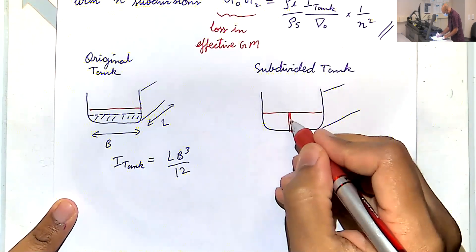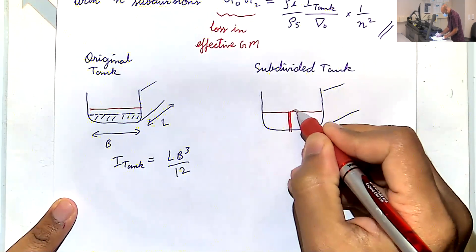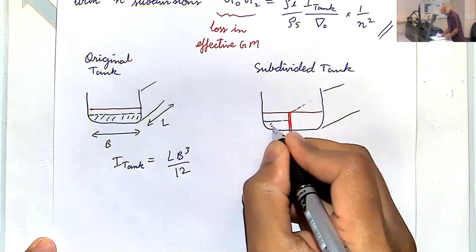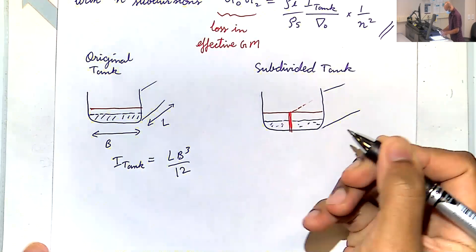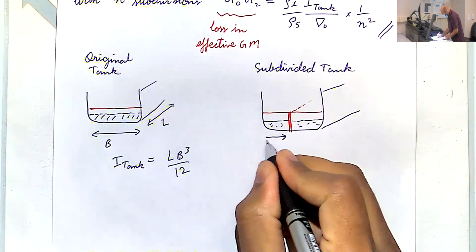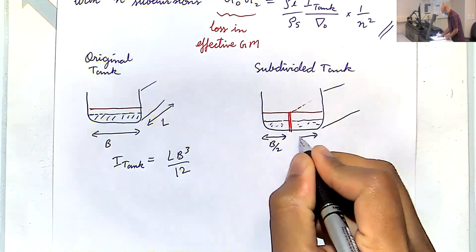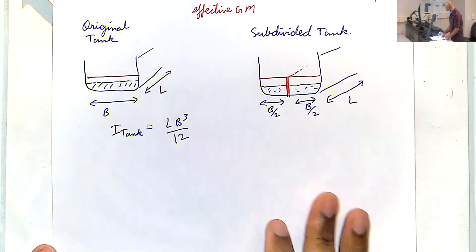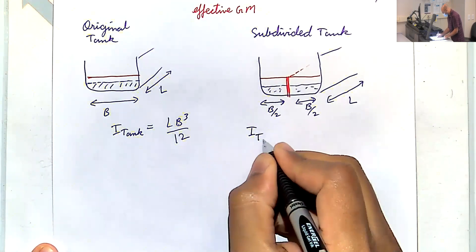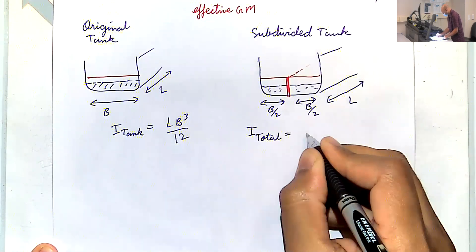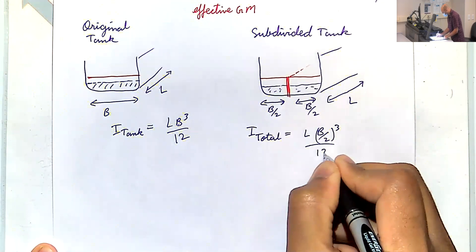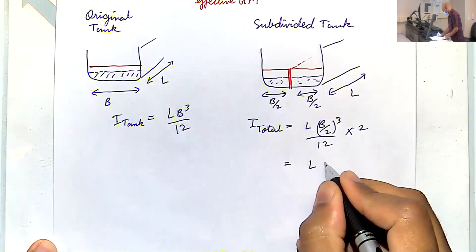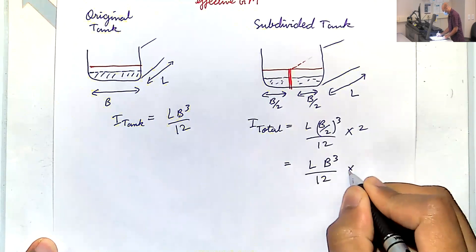With the subdivided tank, you place a huge partition that runs all along the length of the hull, so you basically create two separate liquid levels. Now we have V/2, ρ/2, and the length of the hull is still L. In this case, I_total of the tanks is L(B/2)³ / 12 times 2, which gives L·B³/12 times 1/4.